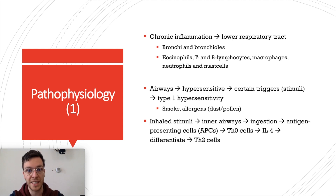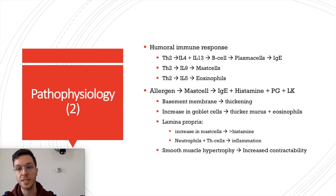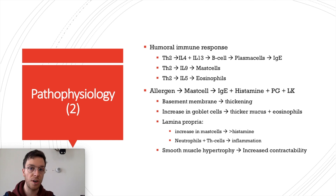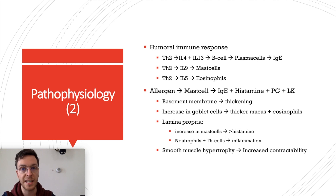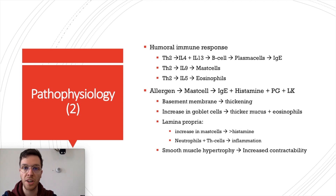These naive T helper cells start making interleukins and chemokines — mostly interleukin-4 — which leads to differentiation into Th2 helper cells. This initiates the humoral immune response: Th2 cells produce interleukin-4 and -13, activating B cells that differentiate into plasma cells making IgE antibodies. Th2 cells also produce interleukin-9, activating mast cells, and interleukin-5, increasing eosinophil counts. Inhaled allergens bind to mast cells, releasing IgE, histamine, prostaglandins, and leukotrienes, leading to airway remodeling.